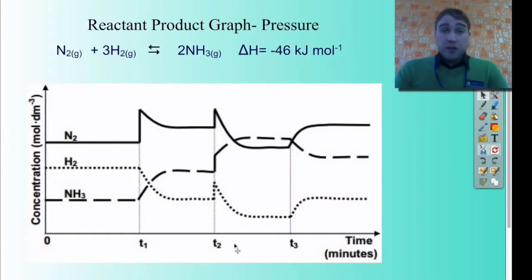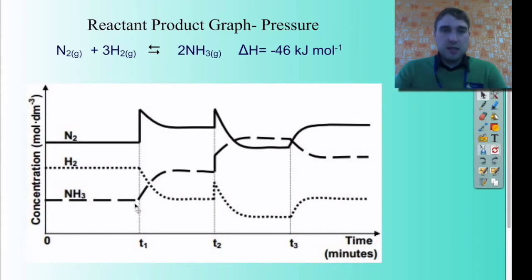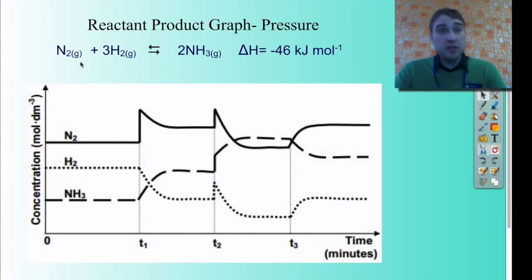Let's bring all three together by looking at this situation: N2 + 3H2 → 2NH3, with delta H negative. Looking at the first change — the NH3 concentration is increasing, H2 is decreasing, and we see a sharp increase in the nitrogen concentration. What that means is they've added nitrogen to the system. So the equilibrium shifts to the right: the amount of nitrogen decreases, hydrogen decreases, and ammonia increases, which is exactly what we see.